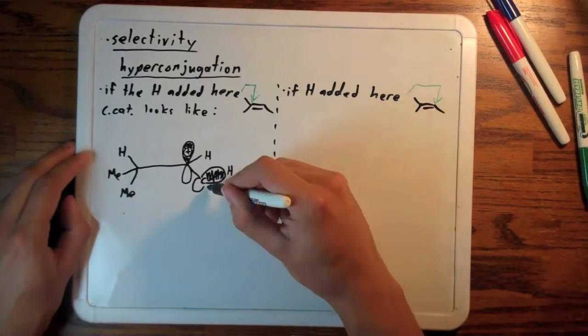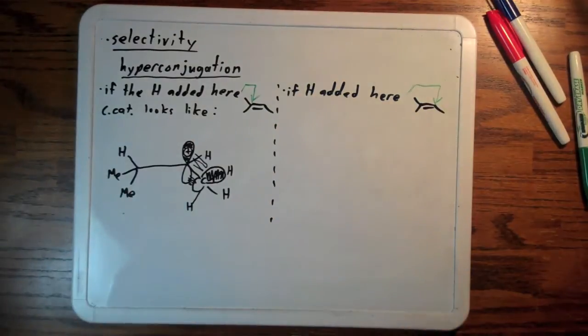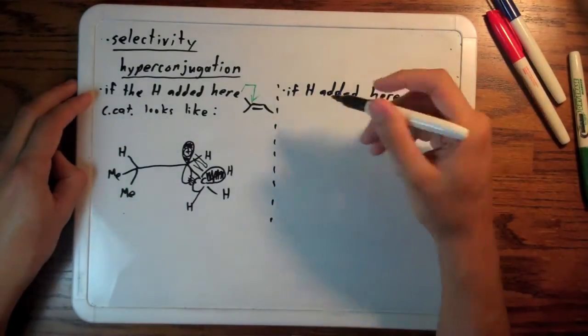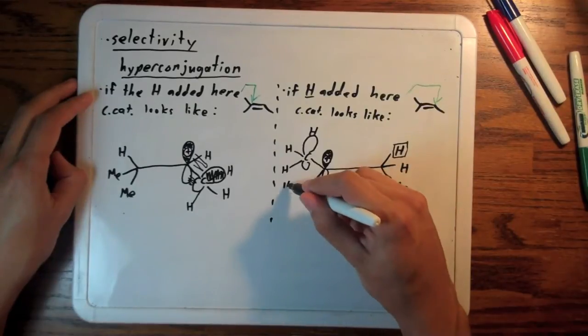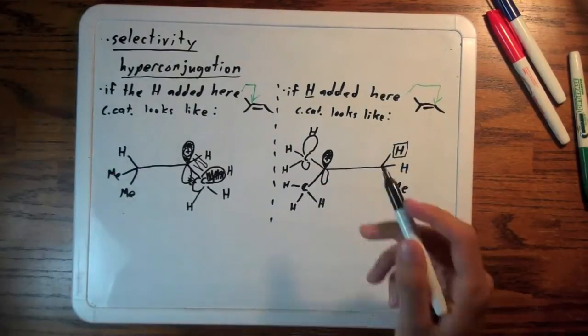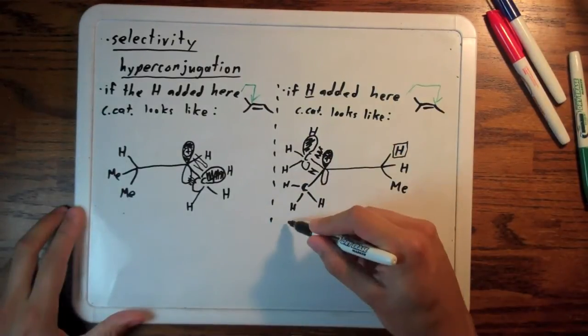I'm going to draw one sigma bond on the methyl group, but keep in mind there are three identical ones like that. Each one of them, when they're properly aligned as the methyl group rotates, provides some electron donation. Now if the hydrogen had added to the other side, our carbocation would look something like this. Now there are two methyl groups donating electrons.